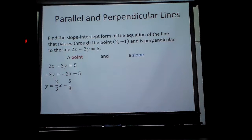And like I said, we did the work on a previous problem. Basically, to find the slope, move the two over, which makes it a negative two x. Then you have to divide by this negative three, which will give you this here. So my slope is two thirds.